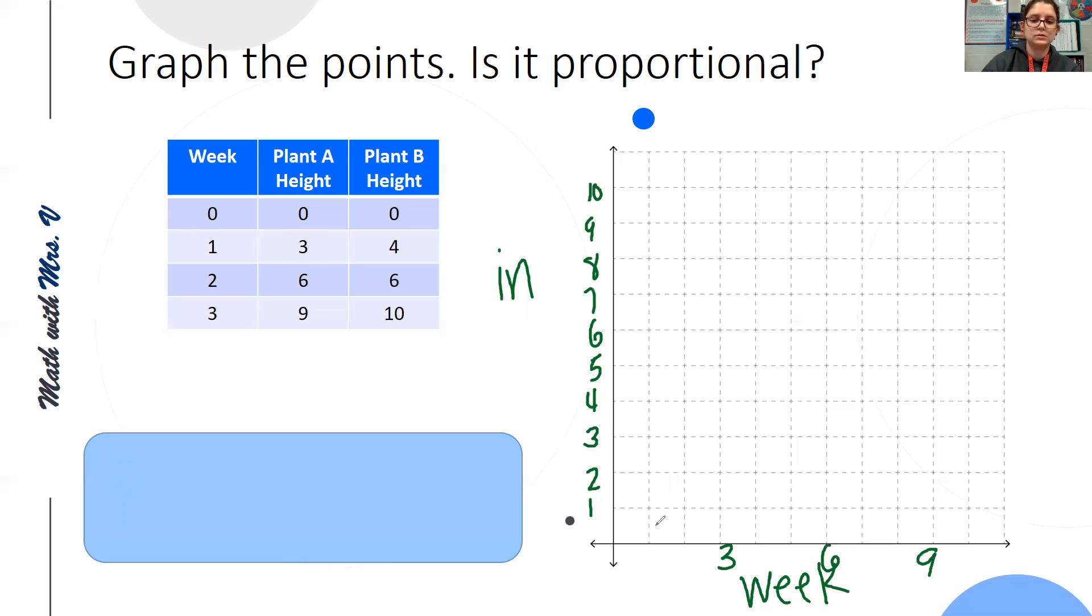So plant A at zero weeks. So right here was zero. After one week, after one week it grew three inches. After two weeks, it grew six inches. And after three weeks, it was nine inches tall. And let's just connect these dots all the way down to the zero.